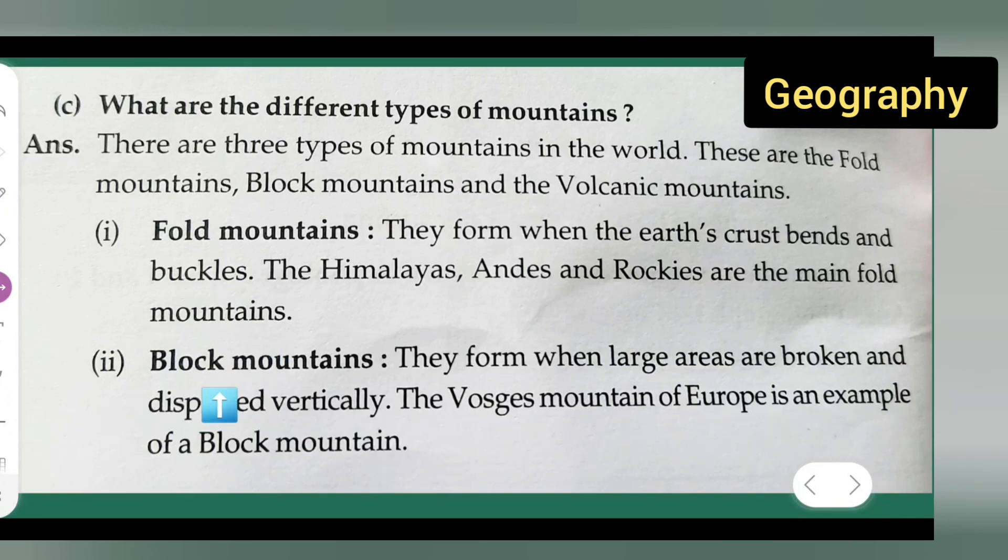Second point is block mountains. They form when large areas are broken and displaced vertically. The Vosges mountain of Europe is an example of a block mountain.